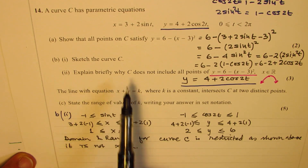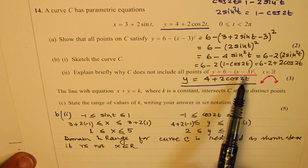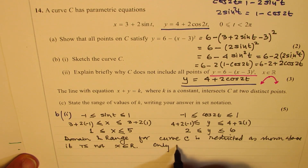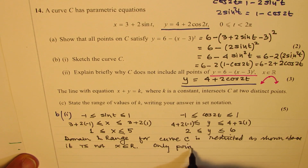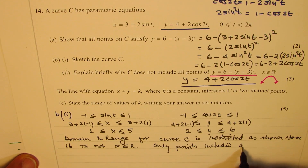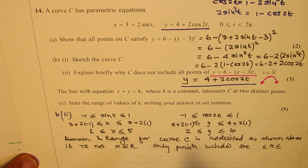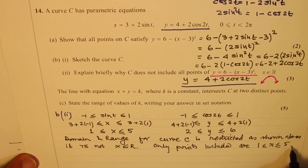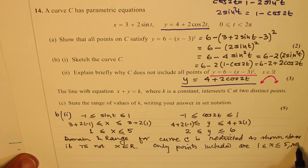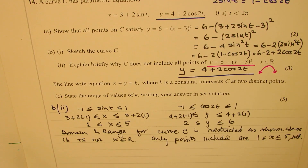It is definitely not x belonging to all real numbers. That is why all the points on this curve are not included — the only points included are for x between 1 and 5, where x belongs to real numbers. That is how we could explain the restriction.